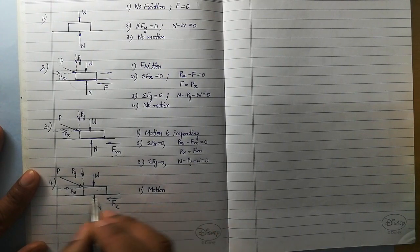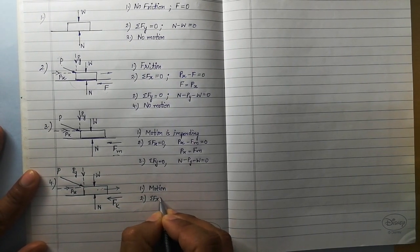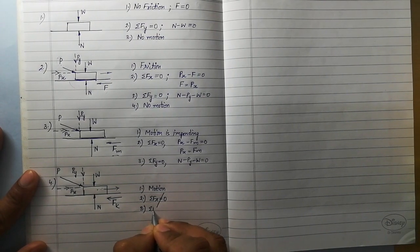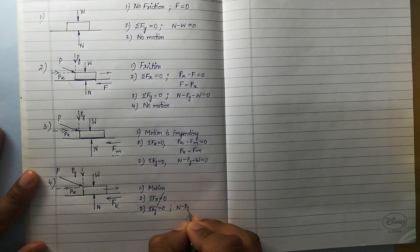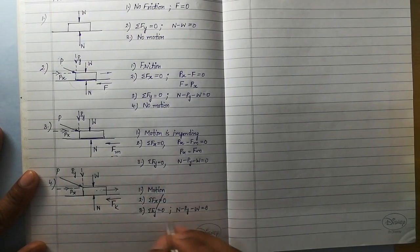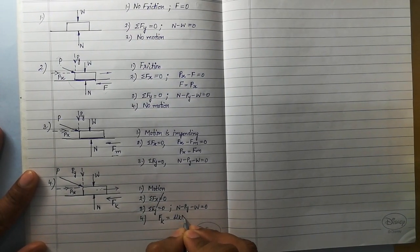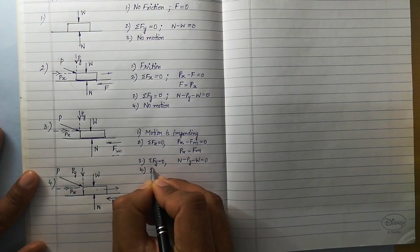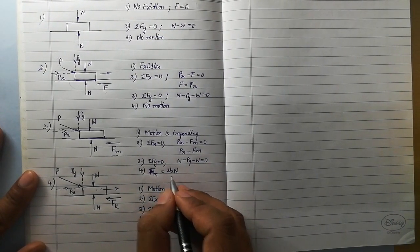A very important point: in this situation the body is moving along the x direction, so you cannot say summation Fx equal to 0 — that is not applicable here. However, summation Fy equal to 0 is still applicable because the body is not moving along the y direction. From this equation we still get: N minus Py minus W equal to 0. In this case, kinetic friction equals mu_K times N, where mu_K is the coefficient of kinetic friction and N is the normal pressure. And in the previous case, limiting friction Fm equals mu_S times N, where mu_S is the coefficient of static friction.